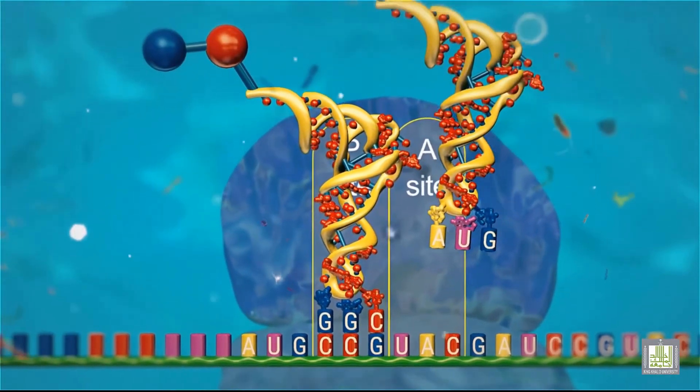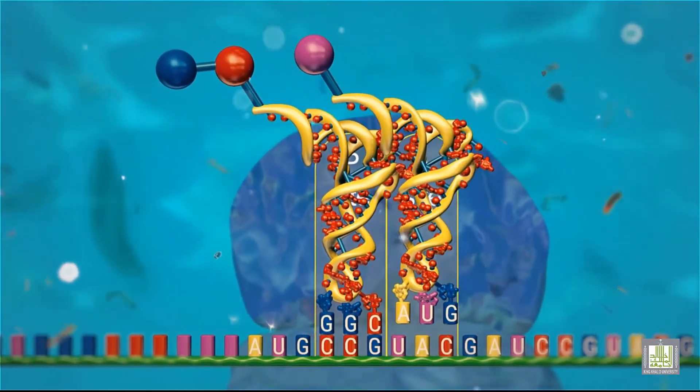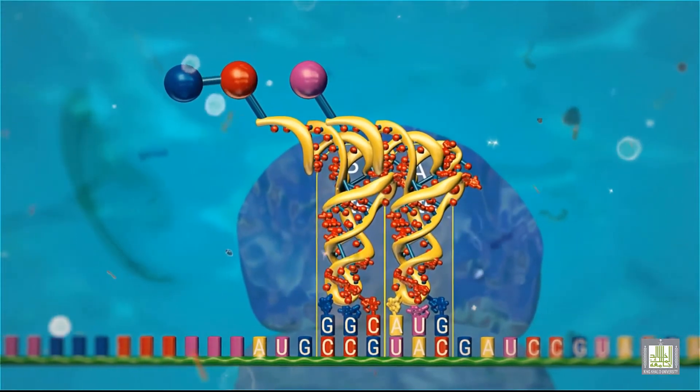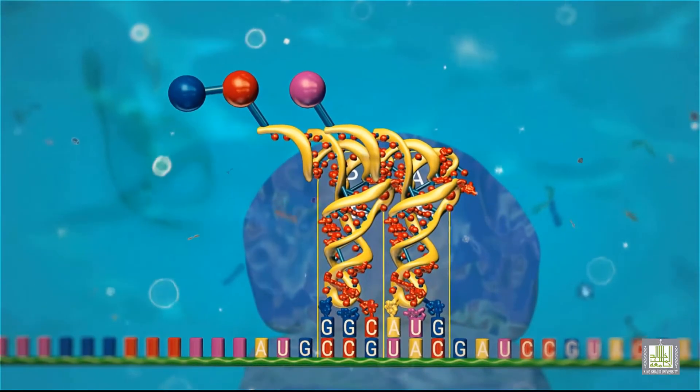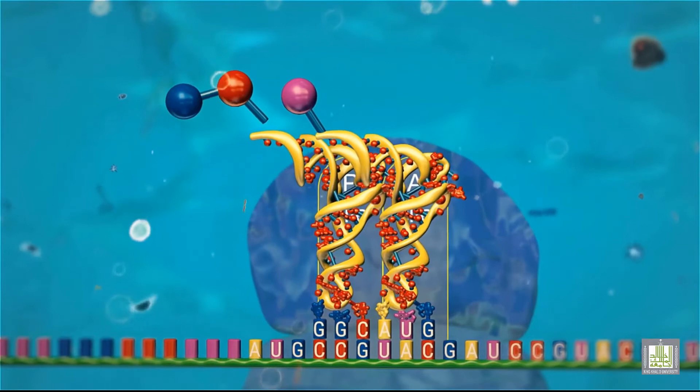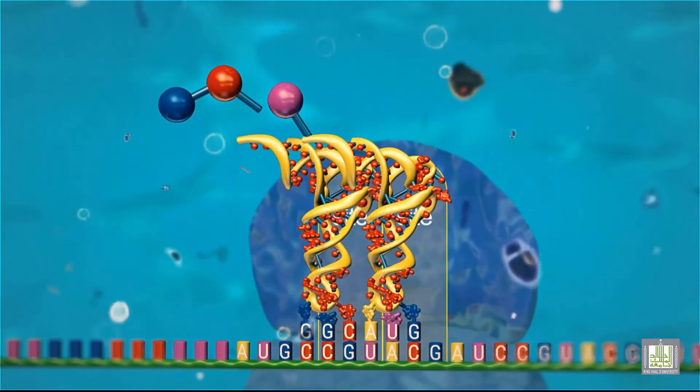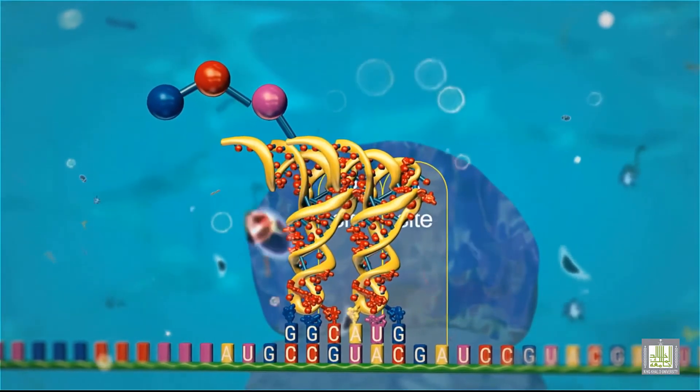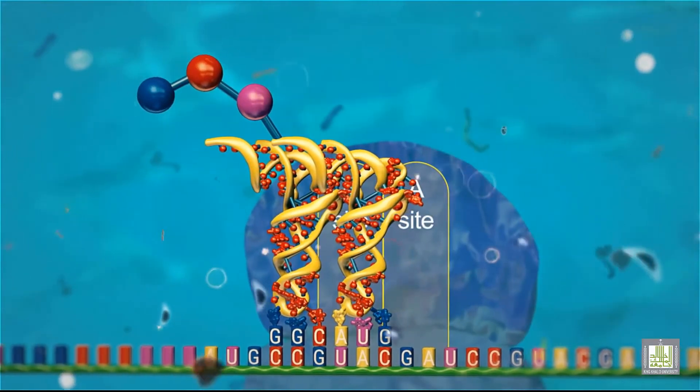A transfer RNA carrying the next amino acid now moves into the A-site, and the ribosome shifts down by a distance of one codon. This is followed by the two amino acids on the transfer RNA in the P-site being transferred to the third amino acid.